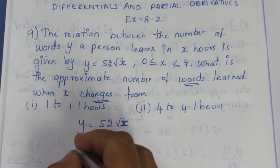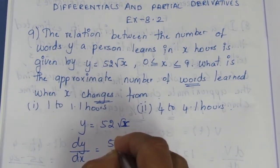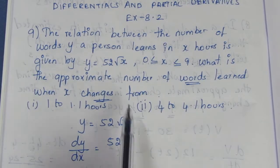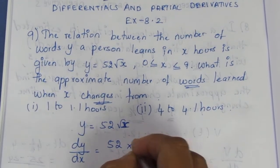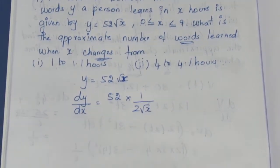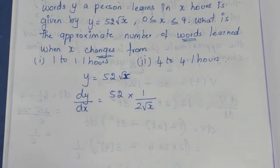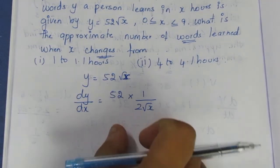To find the differential, we differentiate this formula. Root x differentiation is 1/(2√x). We can write this formula.